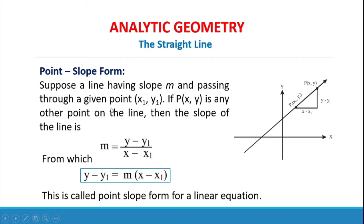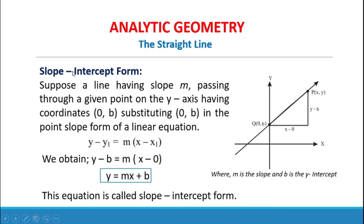Point-slope form: suppose a line has slope m and passes through a given point (x₁, y₁). If P(x, y) is any other point on the line, we find the slope using the formula: m = (y − y₁) / (x − x₁), from which y − y₁ = m(x − x₁). This is called the point-slope form for a linear equation.